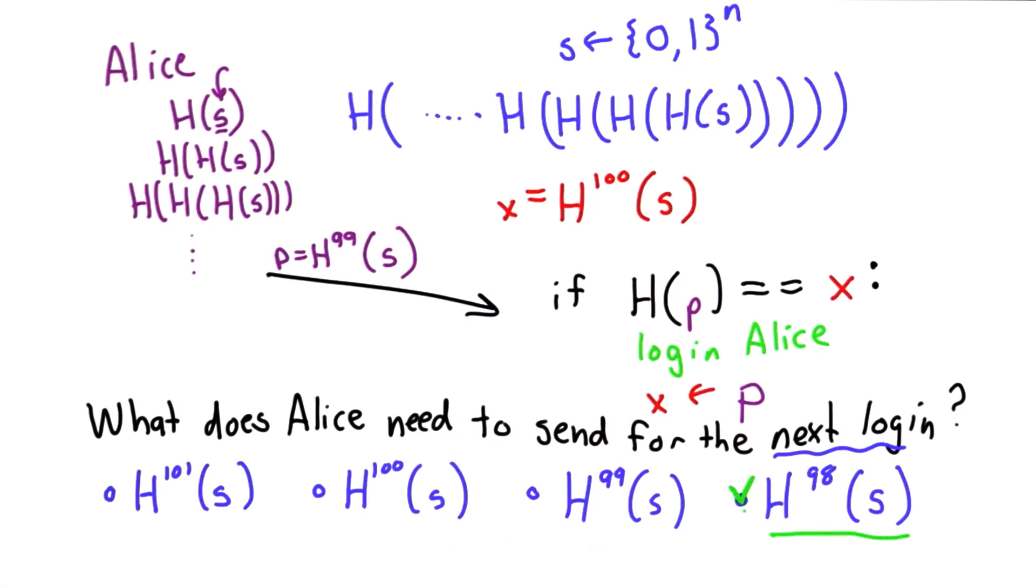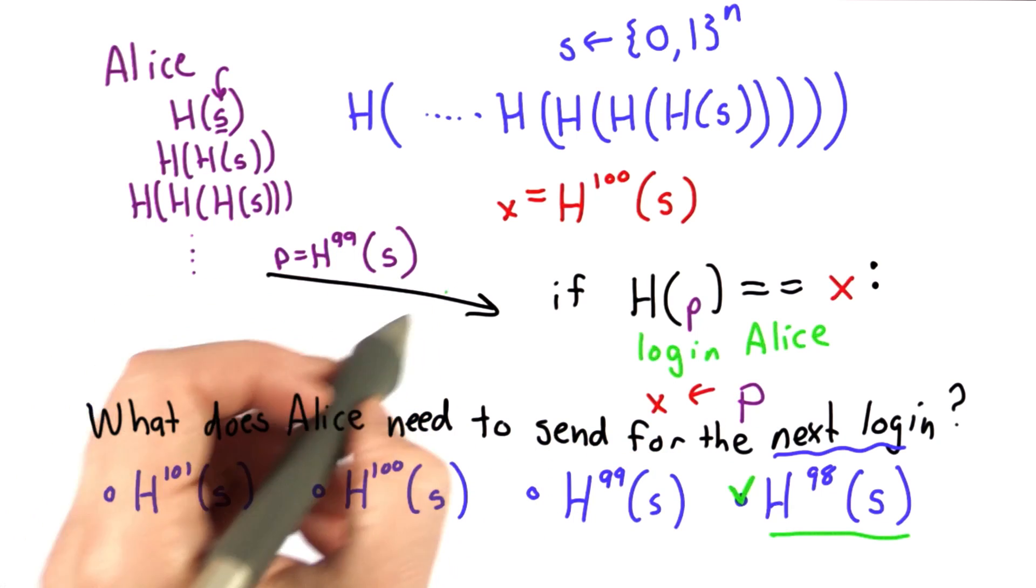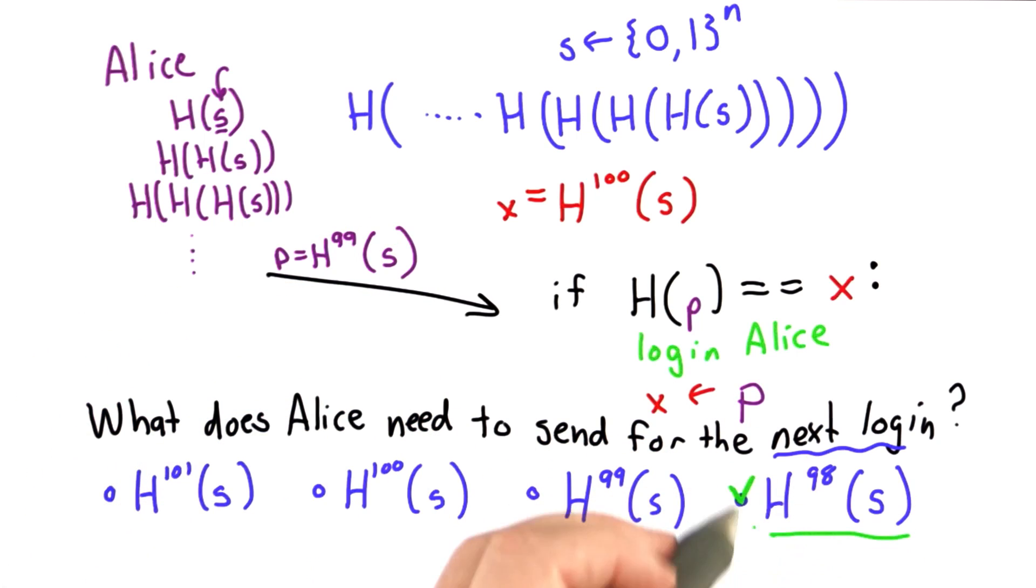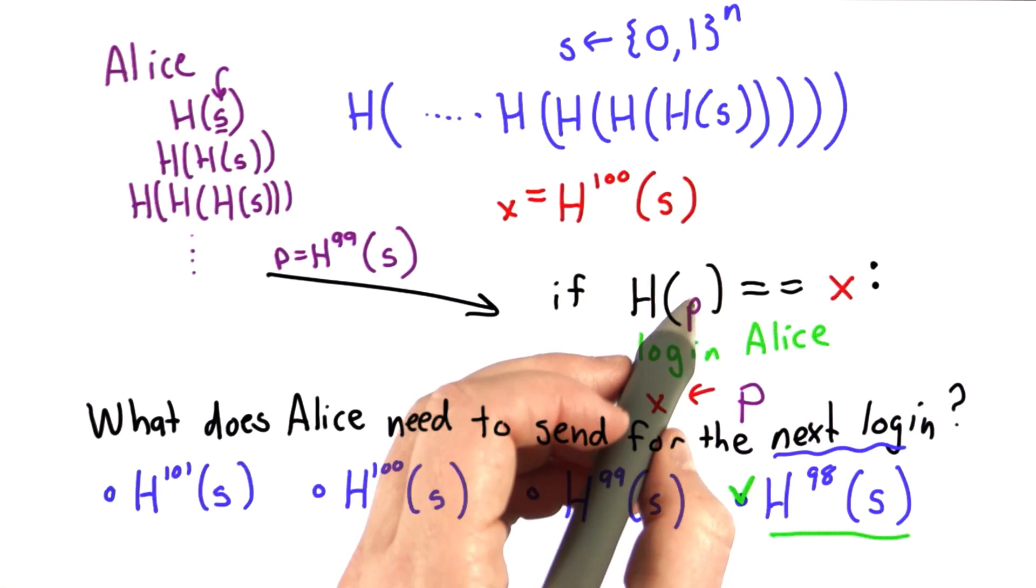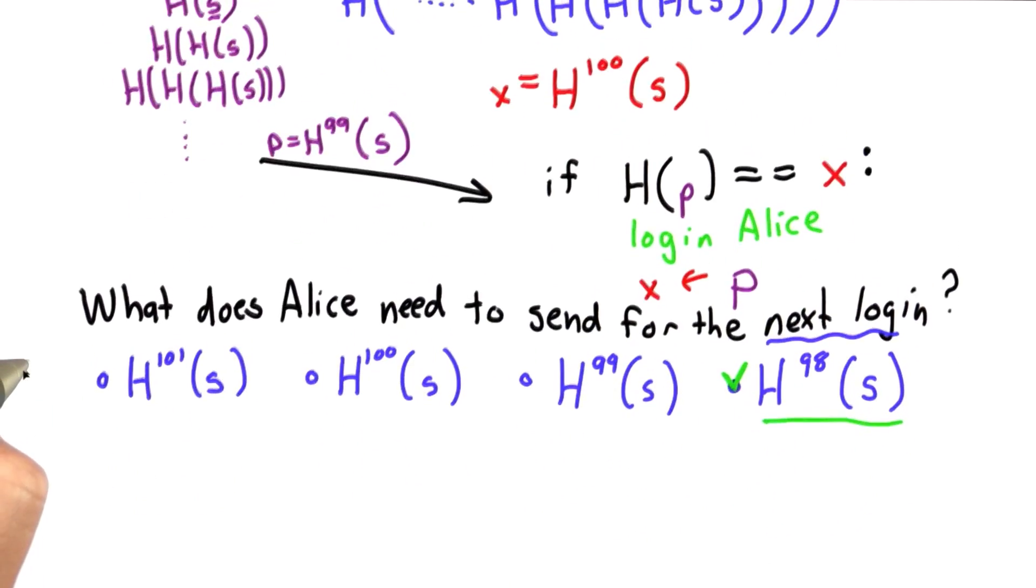The server can check that that's correct using the same process. At this point, the value of x is hash 99 of s. So when the value of p that's sent is hash to the 98th power of s, doing hash 98 times, well, then this equation will be true only if the value sent was correct.